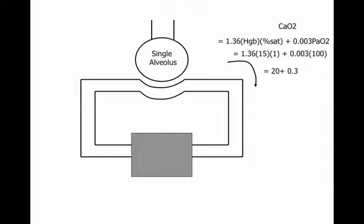Oxygen delivery is cardiac output times arterial oxygen content. The content equation is 1.36 times hemoglobin times percent saturation—that's the amount of oxygen bound to hemoglobin—plus 0.03 times PaO2, which is the amount dissolved in blood. With normal numbers, hemoglobin of 15 and saturation of 100%, the content is about 20. The dissolved portion (0.03 × PaO2) is so small we generally ignore it, because that's where essentially all the oxygen is being delivered.